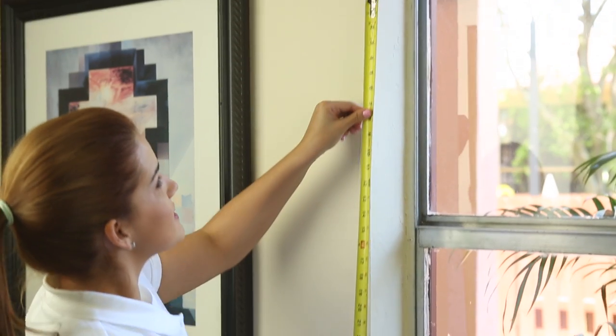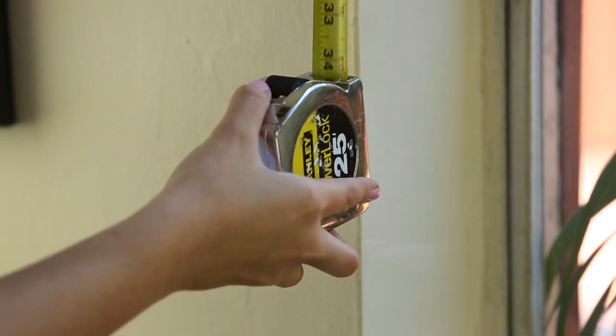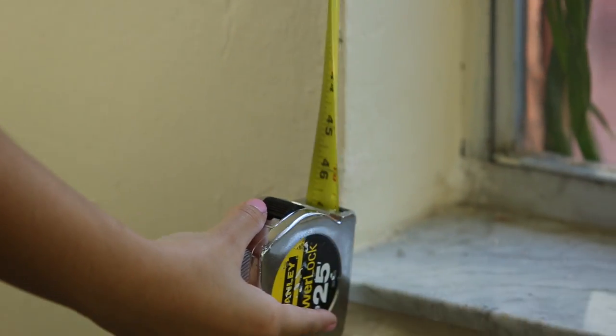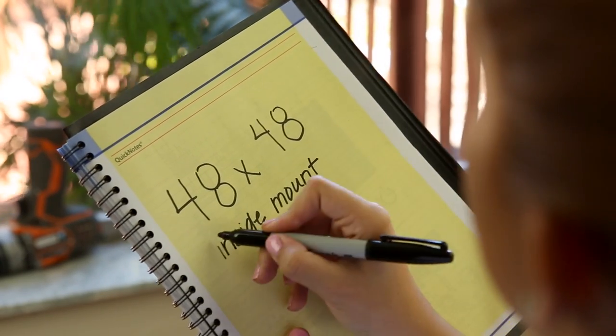Next, measure the height of the window inside the casing where you'll be mounting your blind. Again, make sure you measure rounding to the nearest eighth of an inch. Write down all your measurements. You will use the longest height when ordering.